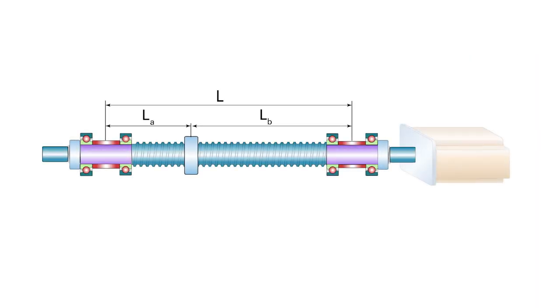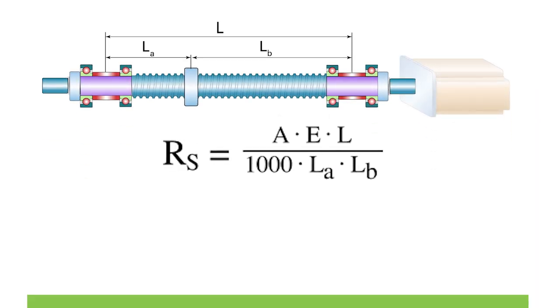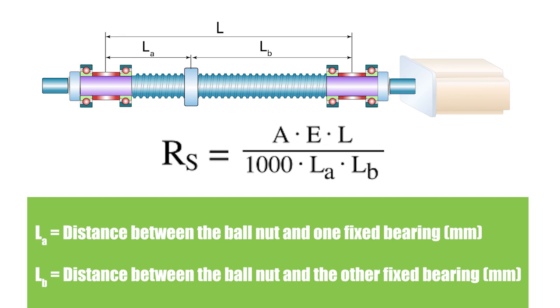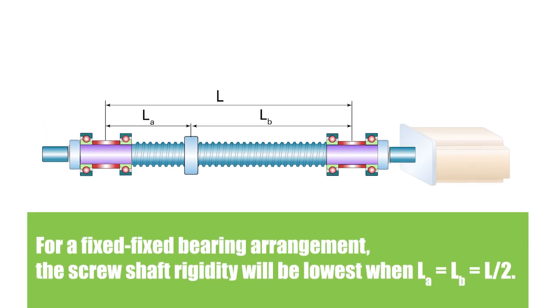When the ball screw assembly has two fixed ends, known as a fixed-fixed bearing arrangement, the rigidity of the screw shaft takes into account the distance of the ball nut from each of the fixed end bearings.